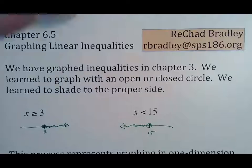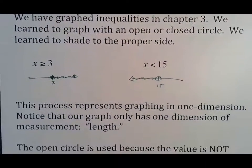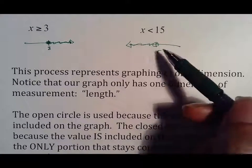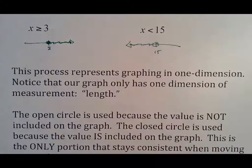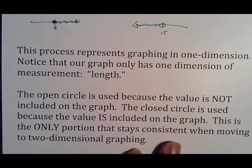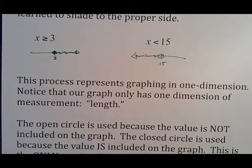That was nice, but it's not going to work like that anymore in terms of the arrow. This process does represent graphing in one dimension. Notice that our graph only has one dimension measurement, which is length. The open circle is used because the value is not included. The closed circle is used because the value is included.